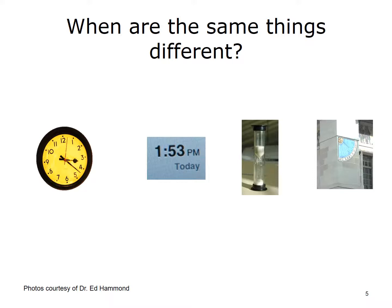Consider an analog clock, digital clock, hourglass, and sundial. What is different about these four methods of indicating time? Are they interchangeable? Is the precision the same? Is the accuracy the same? When are these differences important? Do you have a digital or analog watch? When might your choice be a matter of taste, and when might it be dictated by requirements? Many of the standards we will discuss are necessary because of the requirements.